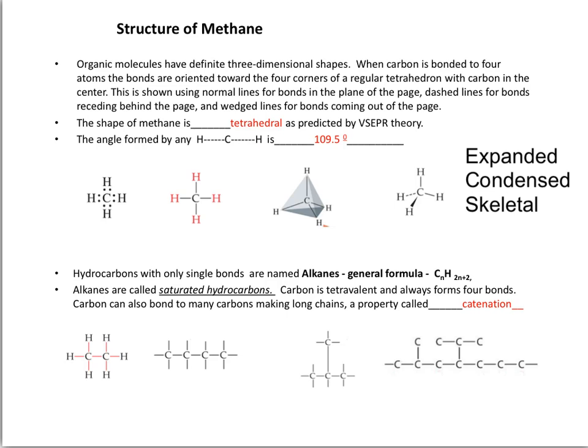four electron groups will point towards a tetrahedron. That is the reason why the central carbon will have a tetrahedral shape with an angle of 109.5 degrees.